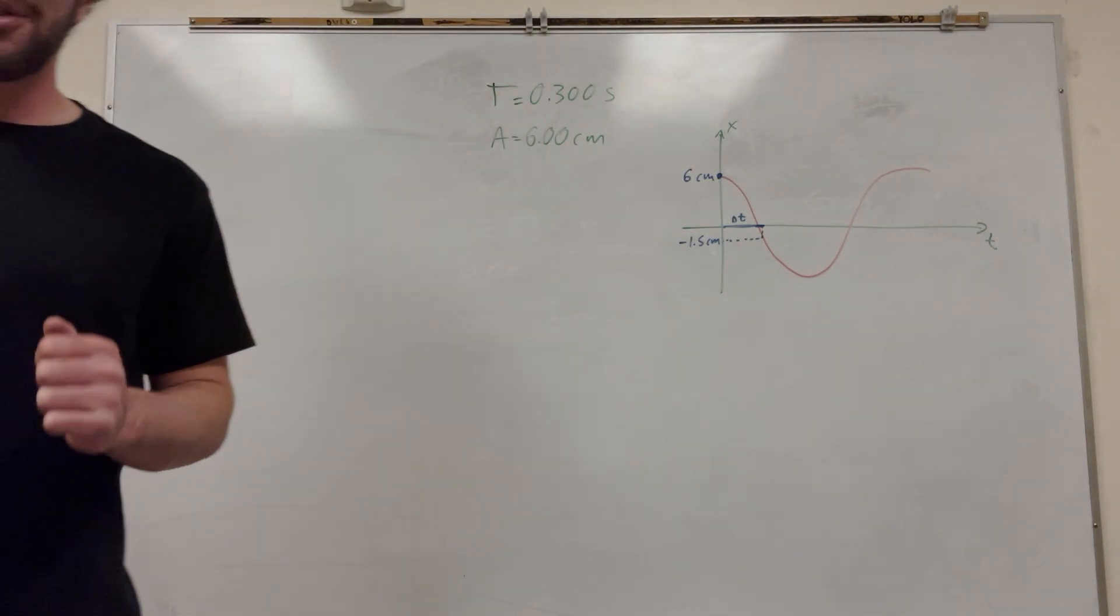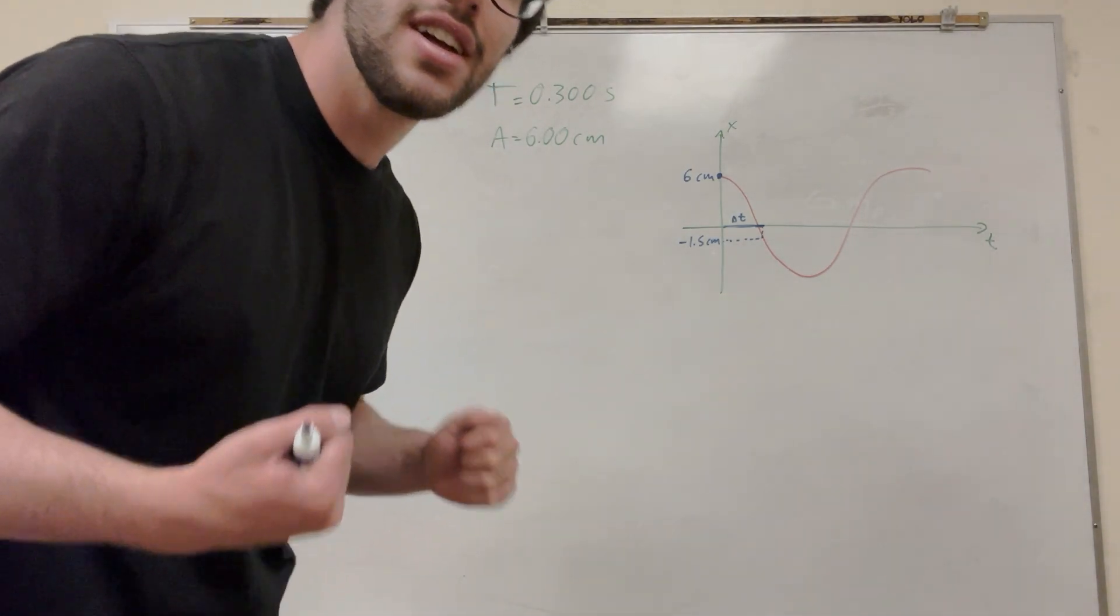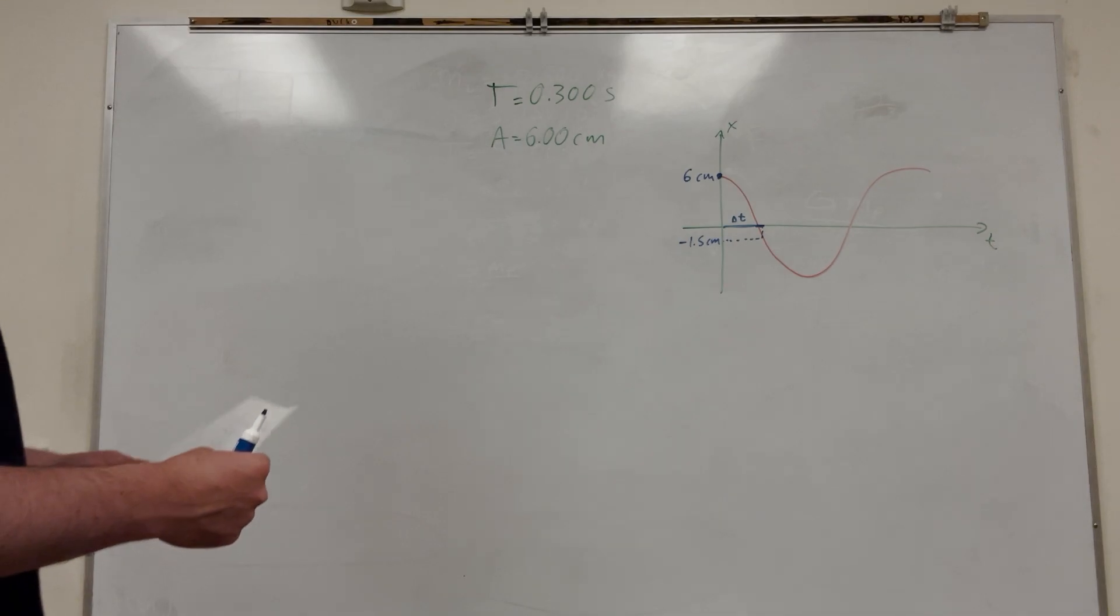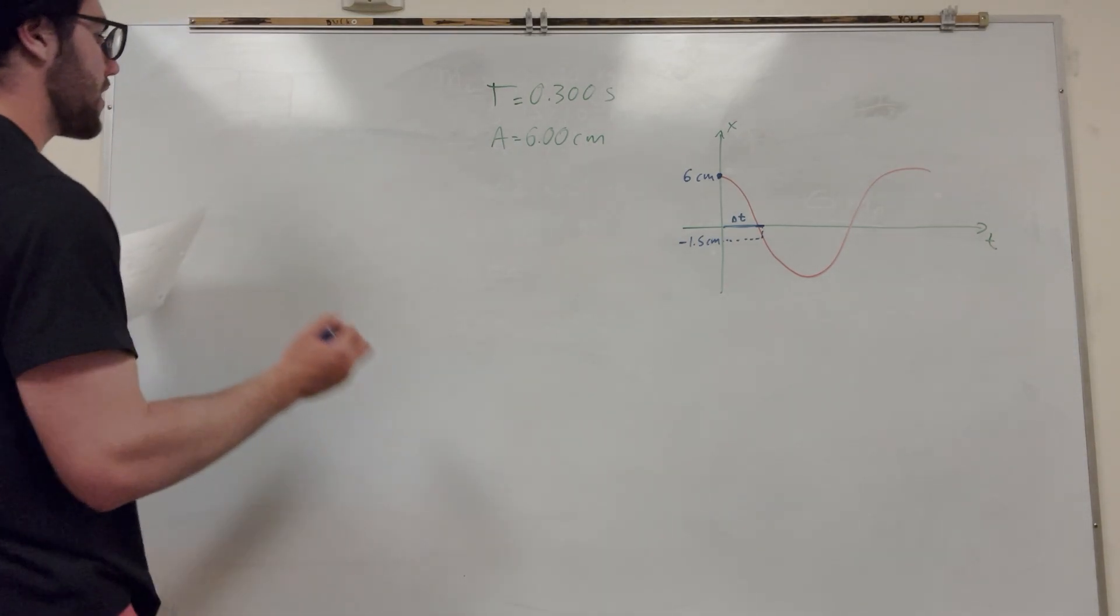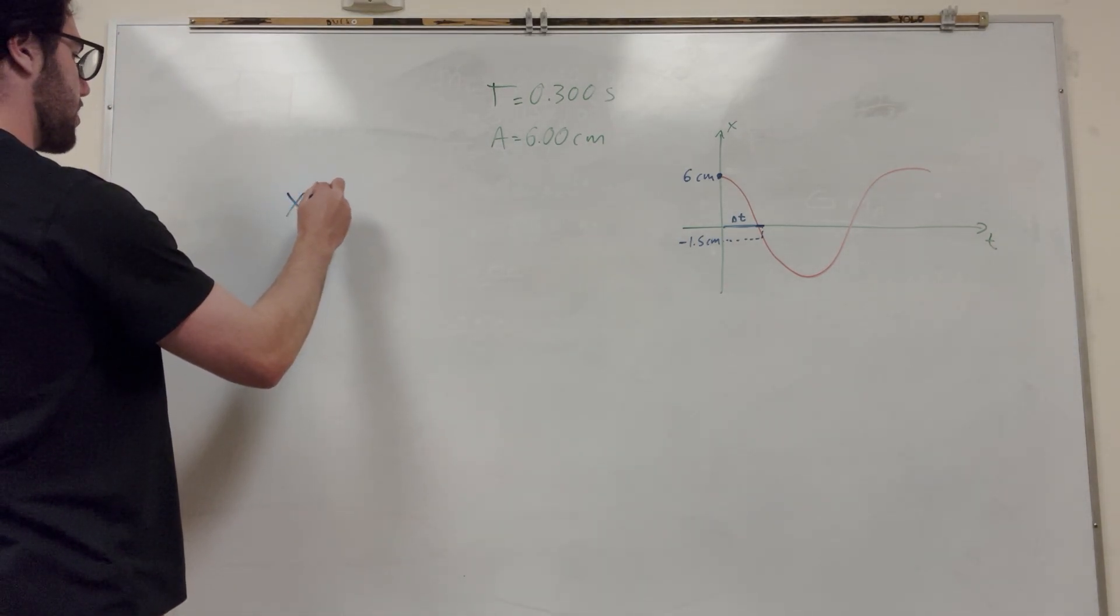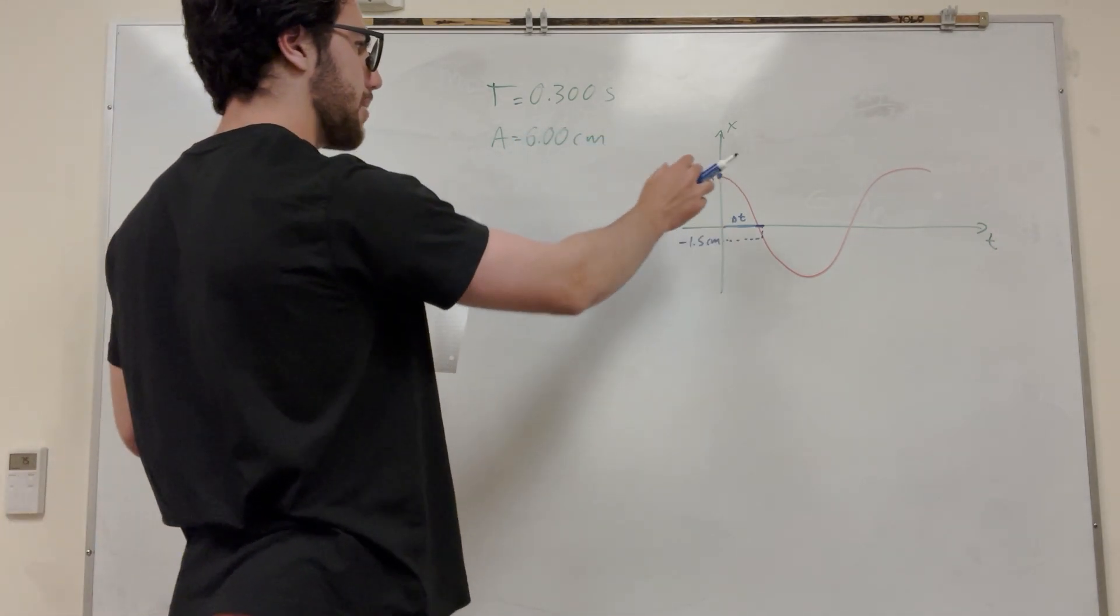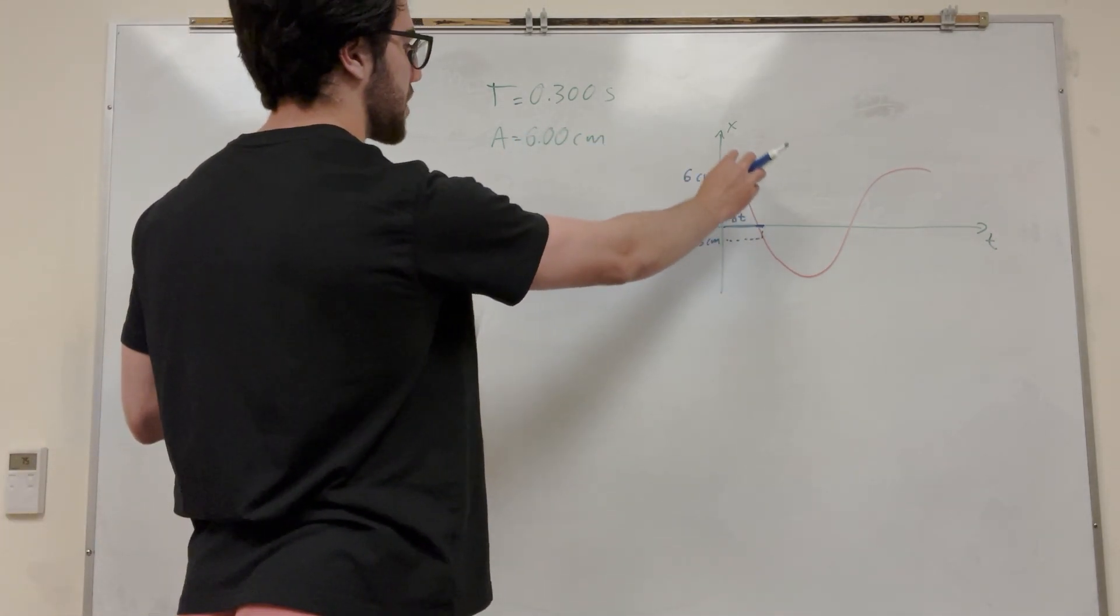So you can't really just do what you think you'd want to do, maybe just divide 0.3 divided by 4, because it doesn't quite work like that with wave functions. So instead, what you need to do is you have to find this function. So our function is x of t, which is saying its vertical position as a function of time. So if its time changes, its vertical position changes.